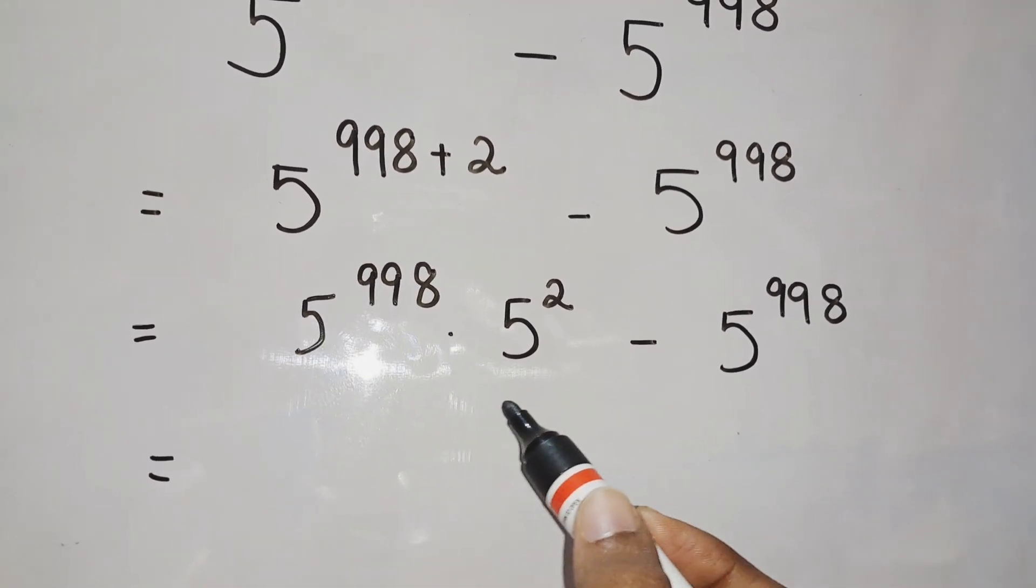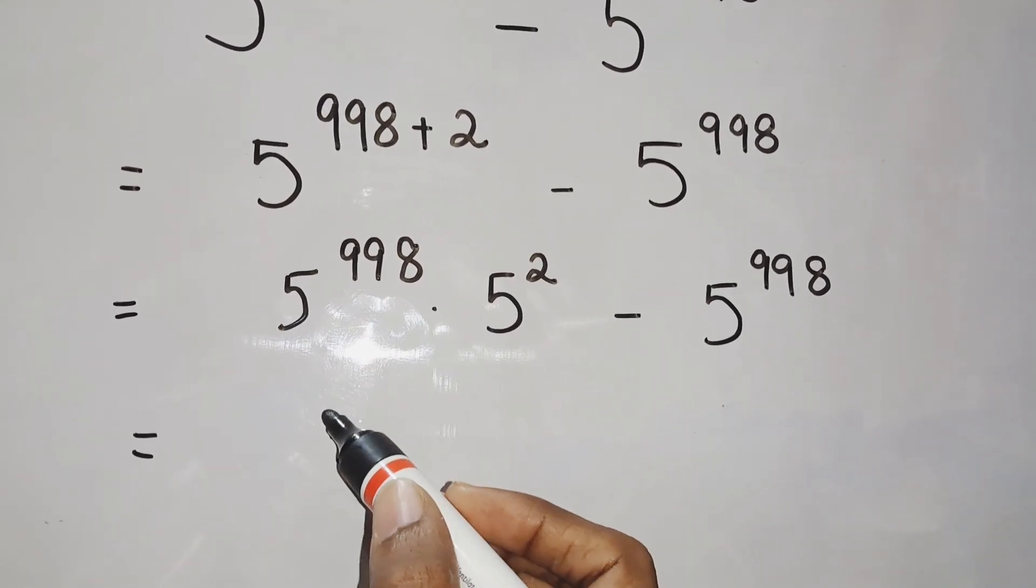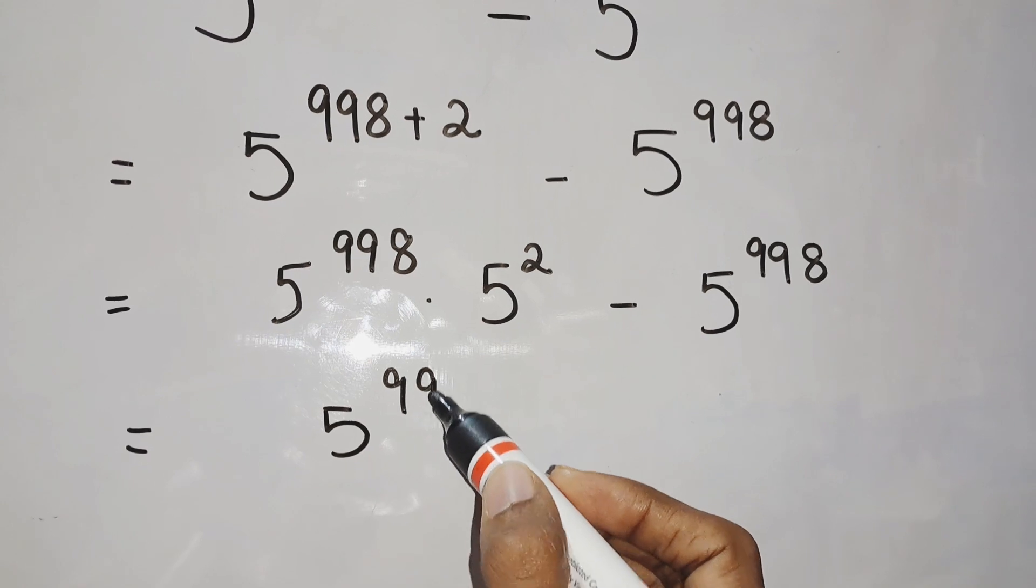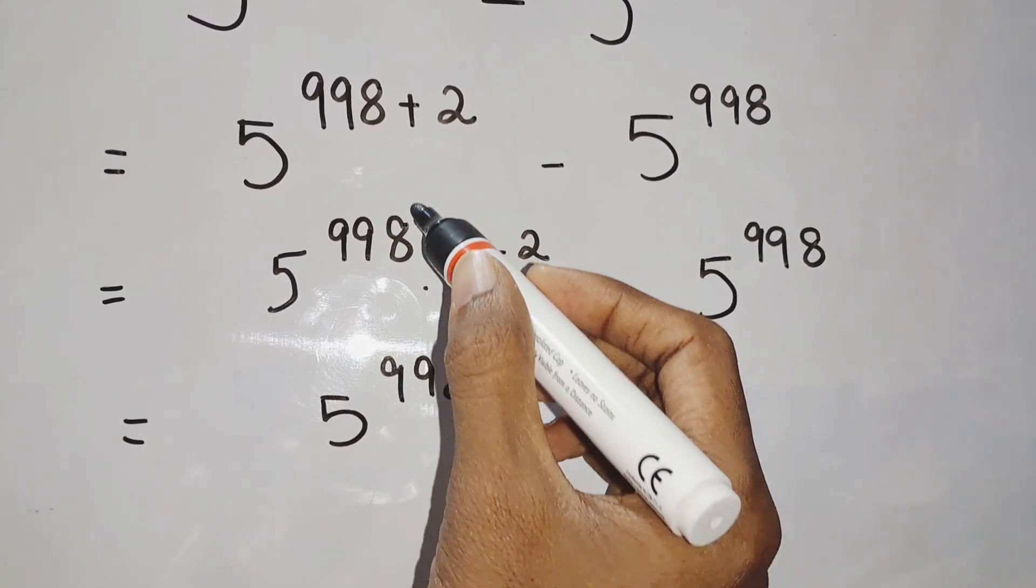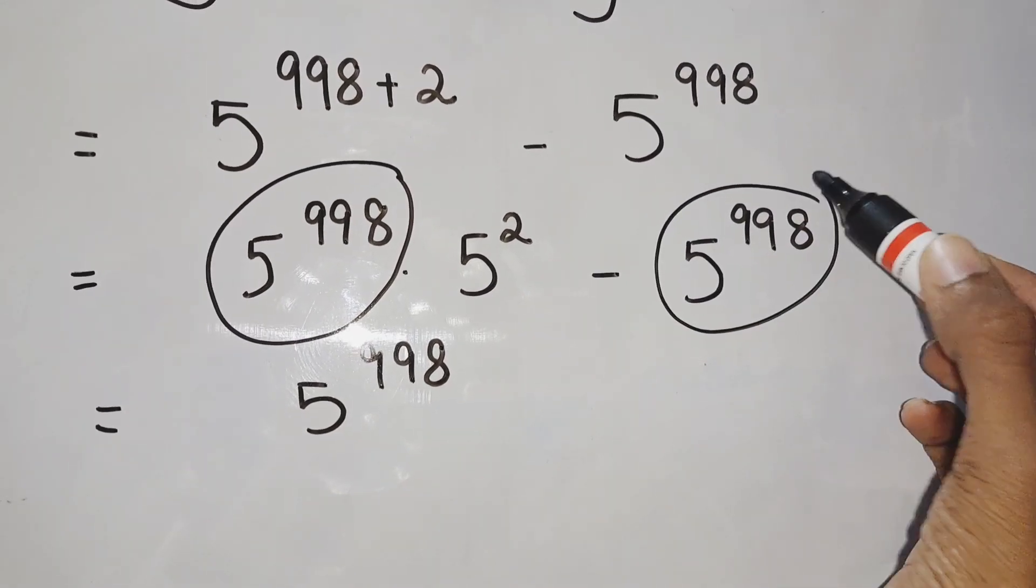By which formula? a to the power m plus n is a to the power m into a to the power n, from which we can take 5 to the power 998 common from the first term and second term.